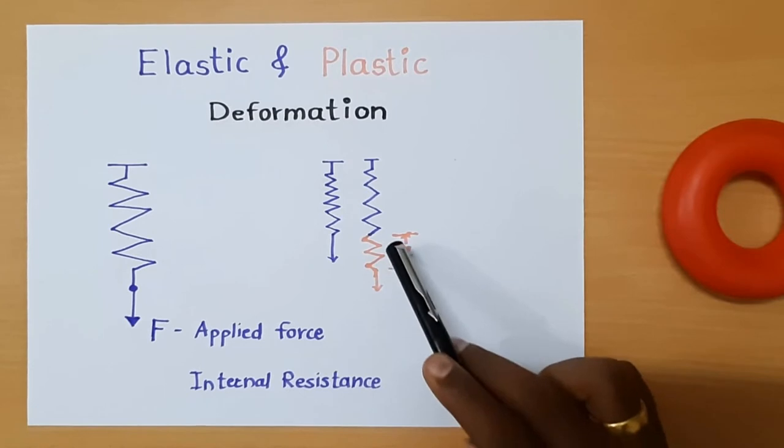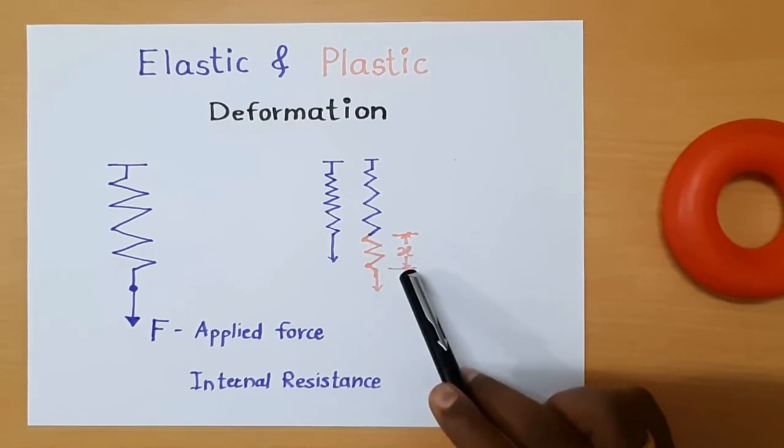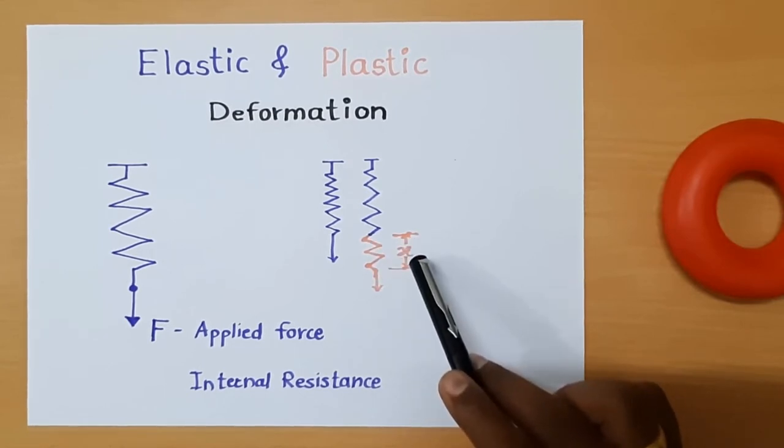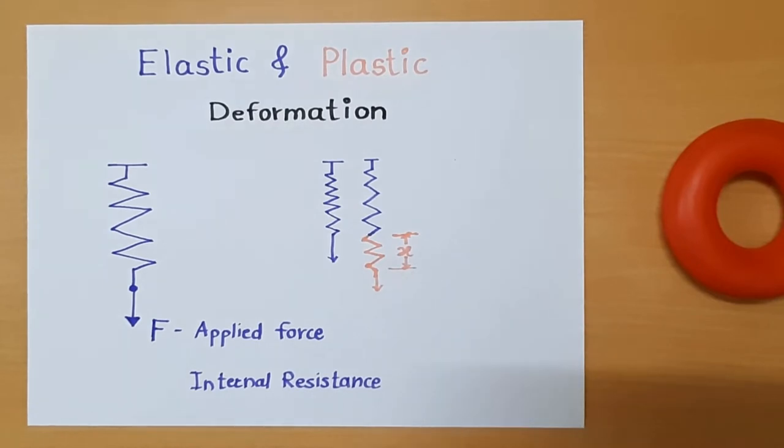This is the force trying to pull that spring in the downward direction. The change in the length is called deformation.